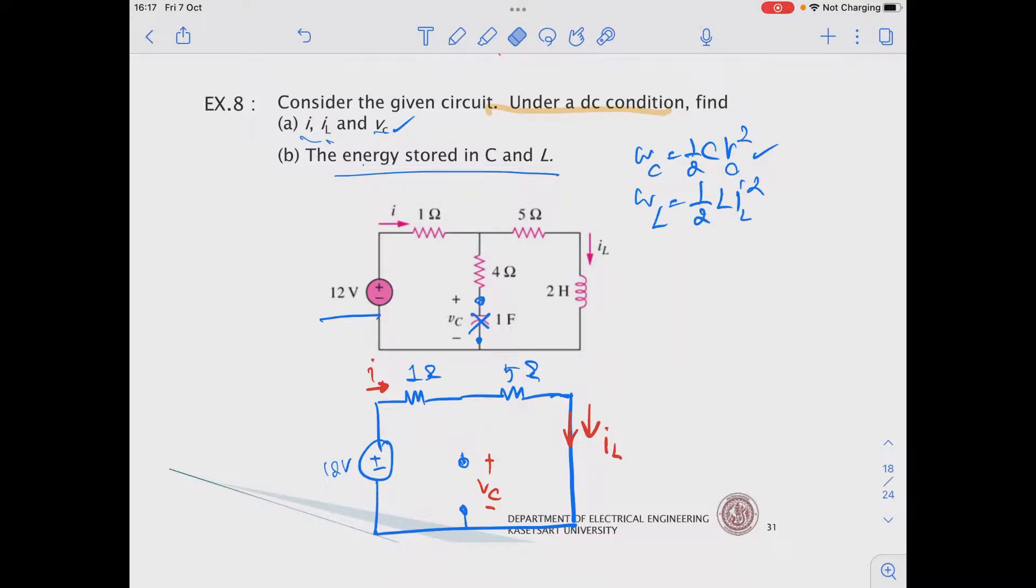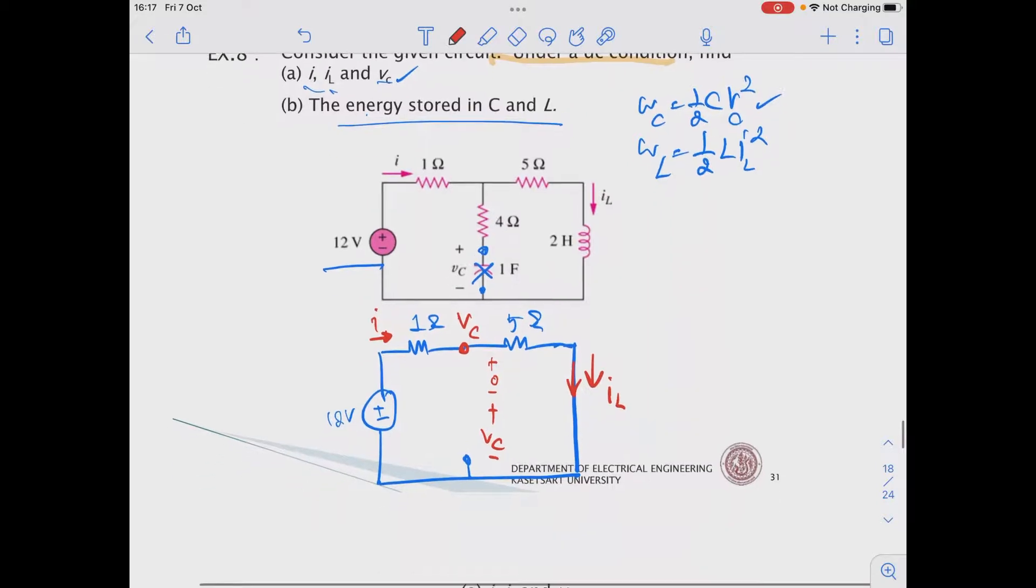So this 4 ohm becomes 0V. So the voltage VC equals the voltage across this 5 ohm, when we consider this as ground, the reference node.